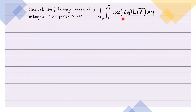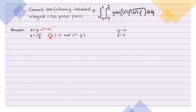So dito ang bounds natin ay sa x, we have x equals y at x equals square root of y. And then sa y naman, we have y equals 0 and y equals 1. So identify ulit natin kung anong mga curve ito. Itong una ay isang line. Itong pangalawa ay square root function. Take note na si x ay non-negative kasi square root siya ng some number, and kapag in-square natin both sides, we get x squared equals y. Ito ay isang parabola — so itong x equals square root of y ay portion lang ng parabola x squared equals y.